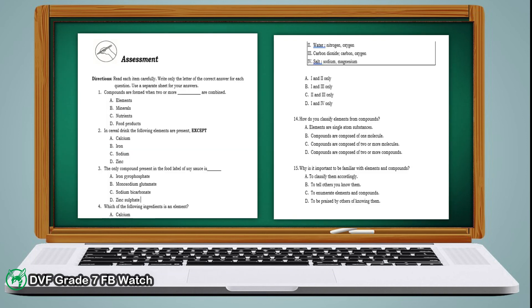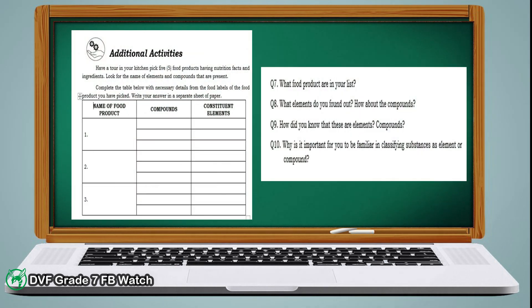Let's proceed with the assessment. Please read each item carefully, then write the letter of the correct answer for each question. Next, the last part of our activity — the additional activities. You are going to look around in your kitchen and pick 5 food products having nutrition facts and ingredients. Find out the names of elements and compounds that are present, then complete the table. Write down the name of each food product found in your kitchen, then enumerate the compounds and constituent elements for each product.